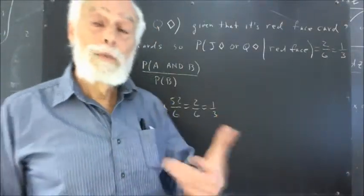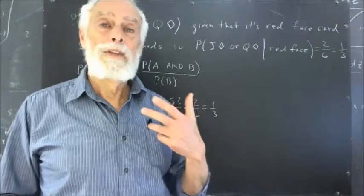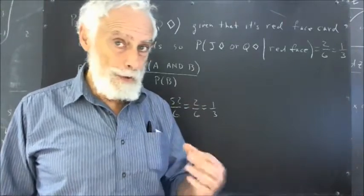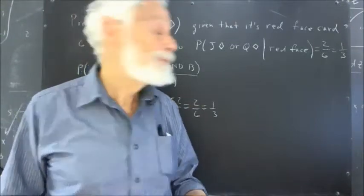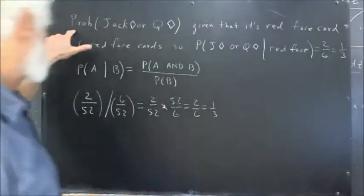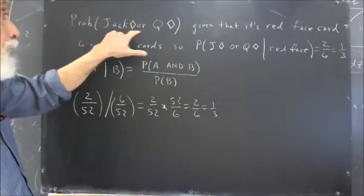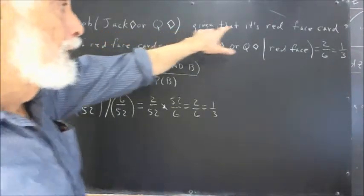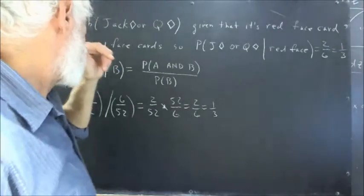And you want to know the probability that that card is either the Jack or the Queen of Diamonds. So we can write that as the probability of Jack of Diamonds or Queen of Diamonds, given that it's a red face card.